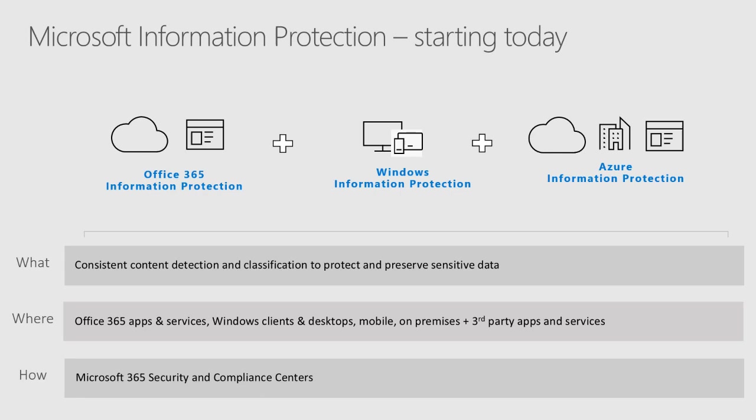The movement of information protection labeling from AIP into the security center in Office 365 — using sensitivity labeling — we've seen that come to fruition now. I'll talk about what that looks like in the new world and how we access the new security center as well as the compliance center, and what the logical split is.